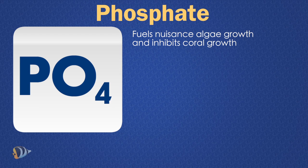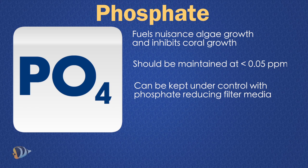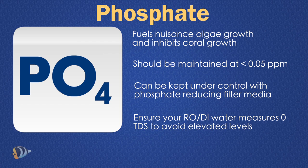Phosphate is another important parameter to test for because it fuels algae growth and inhibits your coral's ability to utilize calcium. The phosphate level in a reef aquarium should be kept below 0.05 ppm. Higher levels can lead to algae issues and cause corals to brown out or deteriorate. Conversely, having an absolute zero phosphate level can starve corals. You can keep your phosphate level low by using one of the many phosphate-reducing filter media options available. You can prevent phosphate from entering your aquarium by using RODI filtered water that measures zero total dissolved solids. Testing for phosphate in a fish-only aquarium can also be helpful to keep nuisance algae at bay.